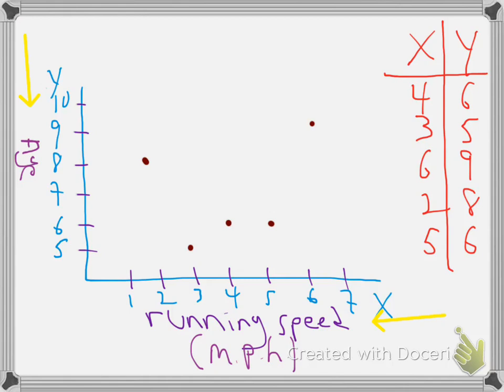And I have a small sample of five kids, and this is their data. So the first kid, he runs four miles per hour, and he is six years old. The second kid runs three miles per hour, and he's five years old.